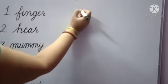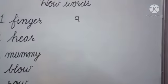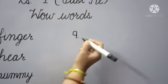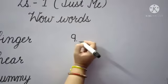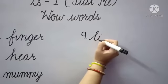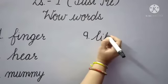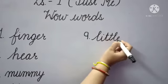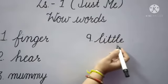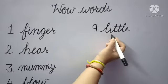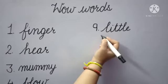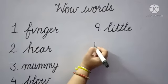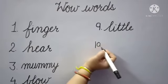Next, number 9: 'little'. Tell me kids, what is the spelling of little? L-I-T-T-L-E, little. Little means 'chota' (small).